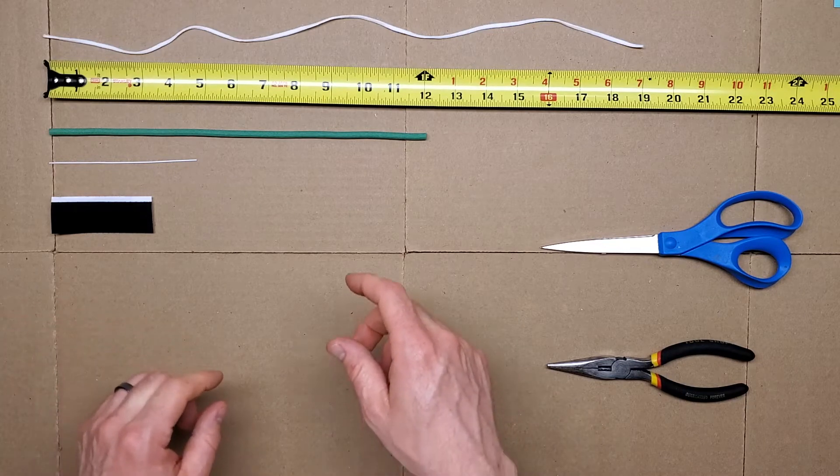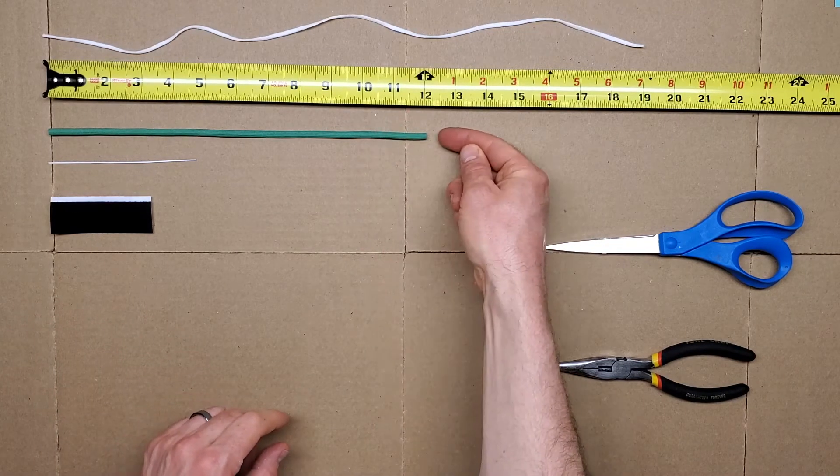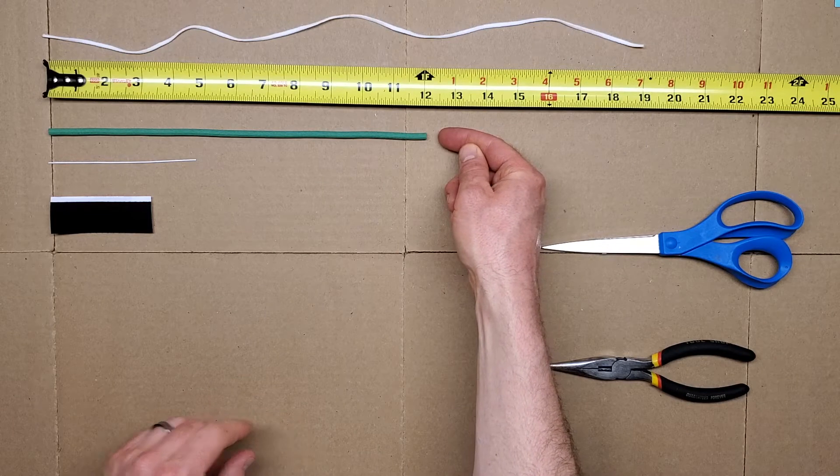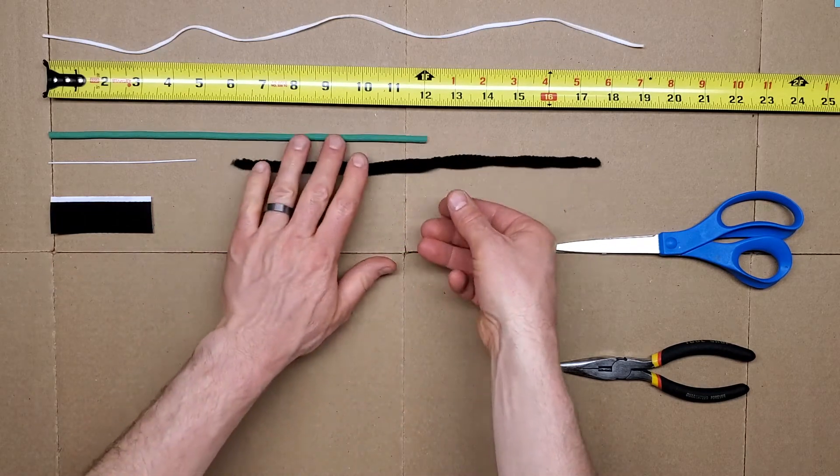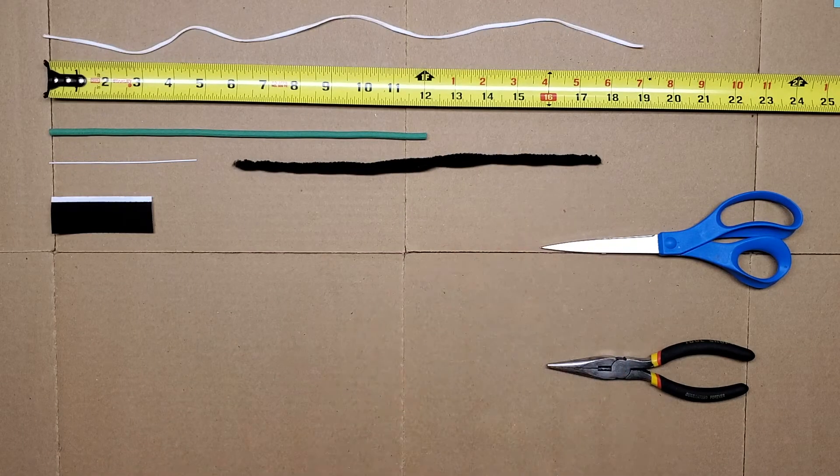You will also need approximately 12 inches of garden tie, or you can use pipe cleaner. Here I have twisted three pipe cleaners together.